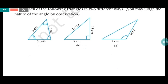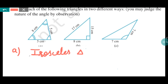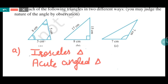In part A, you can see the sides are 5cm, 5cm, and 8cm. Since two sides are equal, it is an isosceles triangle. Now according to the angles, you can see all the angles are acute. If all the angles are acute angles, then we write it as an acute angled triangle. So this triangle is isosceles and acute angled.